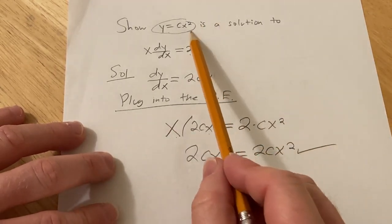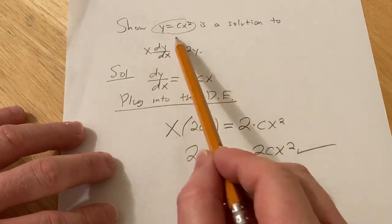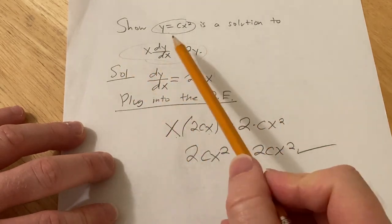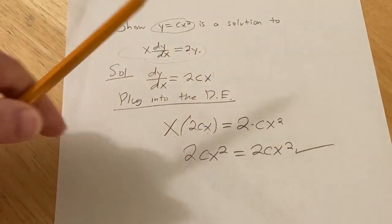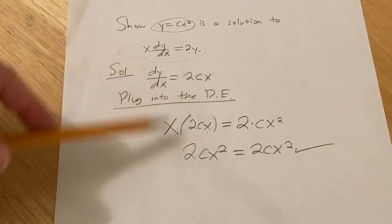So basically whenever you have to show that something is a solution you basically compute as many derivatives as it takes and you plug everything into your differential equation and then you just make sure it's true. If we had like a second derivative here, in that case we would take the second derivative and go from there.